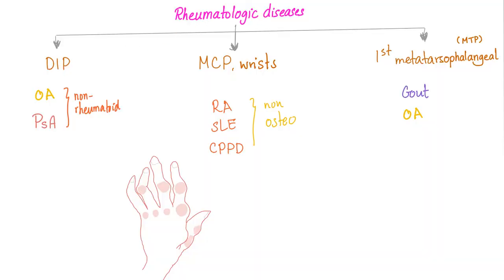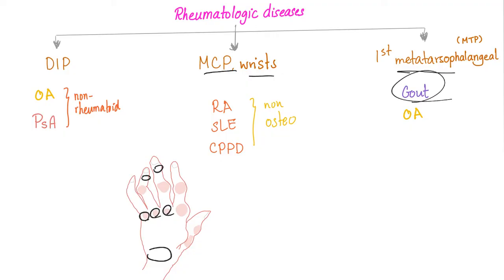Rheumatological diseases could involve the DIP — distal interphalangeal joints — or MCP, the metacarpophalangeal joints, the wrist, and the first metatarsophalangeal in your foot, which is the famous gout joint. Osteoarthritis involves the DIP. It can also involve the PIP — the proximal interphalangeal joints. What's the most commonly involved joint in osteoarthritis? The answer is CMC1 — the first carpometacarpal joint.